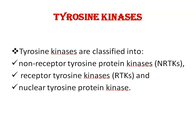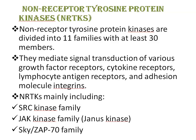Tyrosine kinases are classified into three types: non-receptor tyrosine protein kinases, receptor tyrosine kinases, and nuclear tyrosine protein kinases. Non-receptor tyrosine protein kinases, abbreviated as NRTKs, are divided into 11 families with at least 30 members. They mediate signal transduction of various growth factor receptors, cytokine receptors, lymphocyte antigen receptors, and adhesion molecule integrins.